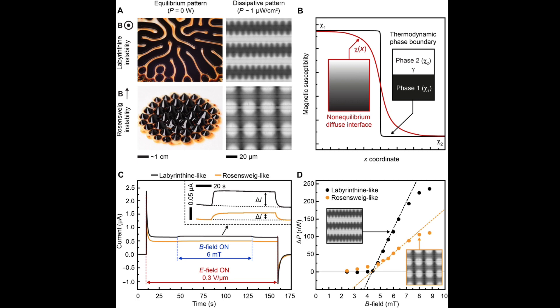"Most dissipative systems are very complex — for example, it's very hard to reduce living structures to a set of simple parameters which could explain the emergence of certain structures," says Rigoni. The voltage-driven ferrofluid can be used to study the transition into a dissipative system and understand how external influences such as a magnetic field interact with the system to generate or modify structures.